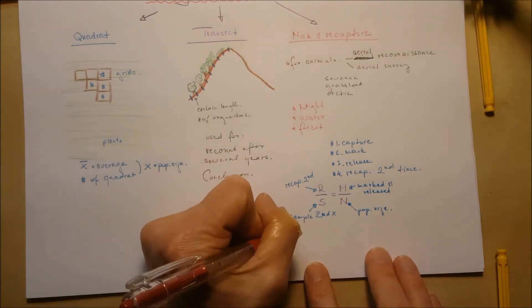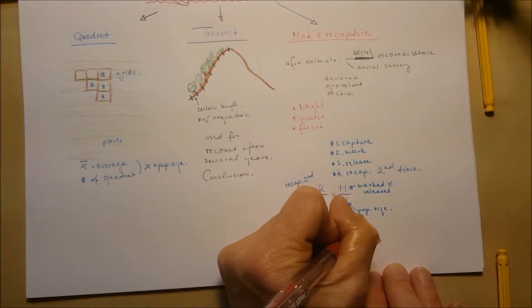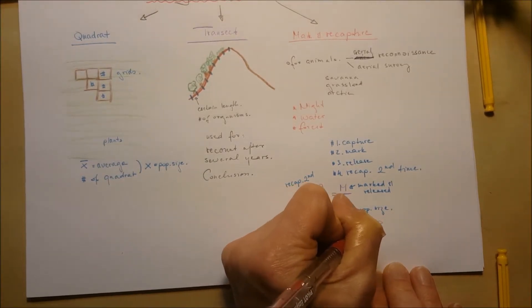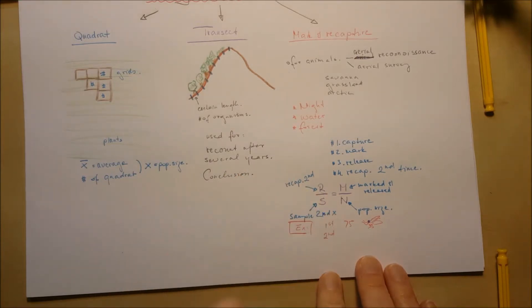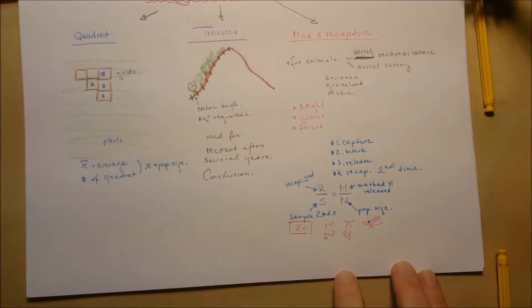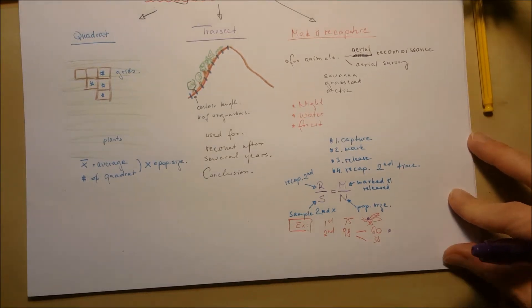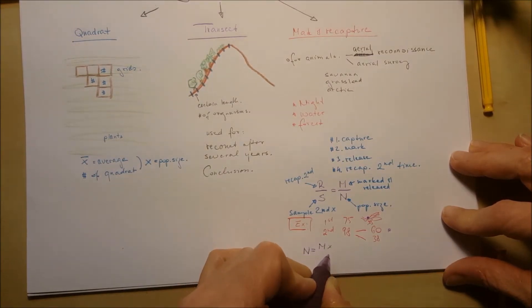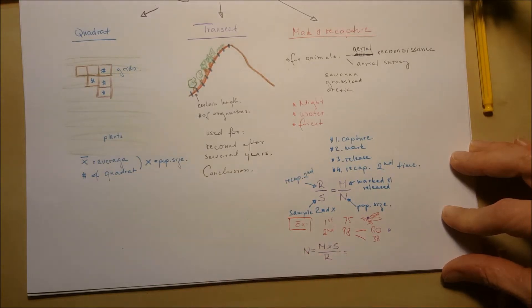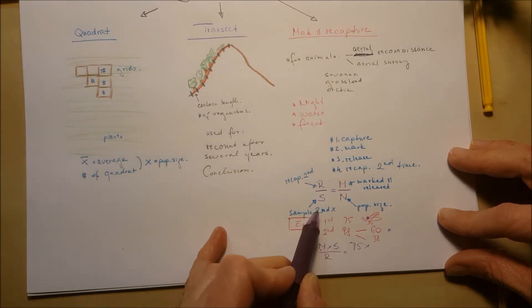For example, the first time we catch 75 grasshoppers over a certain area and mark them. The second time we catch 98 grasshoppers, sort them into marked and not marked, and find that 60 were marked and 38 were not. Using the formula and expressing N as M times S divided by R gives us around 122 for the population size.